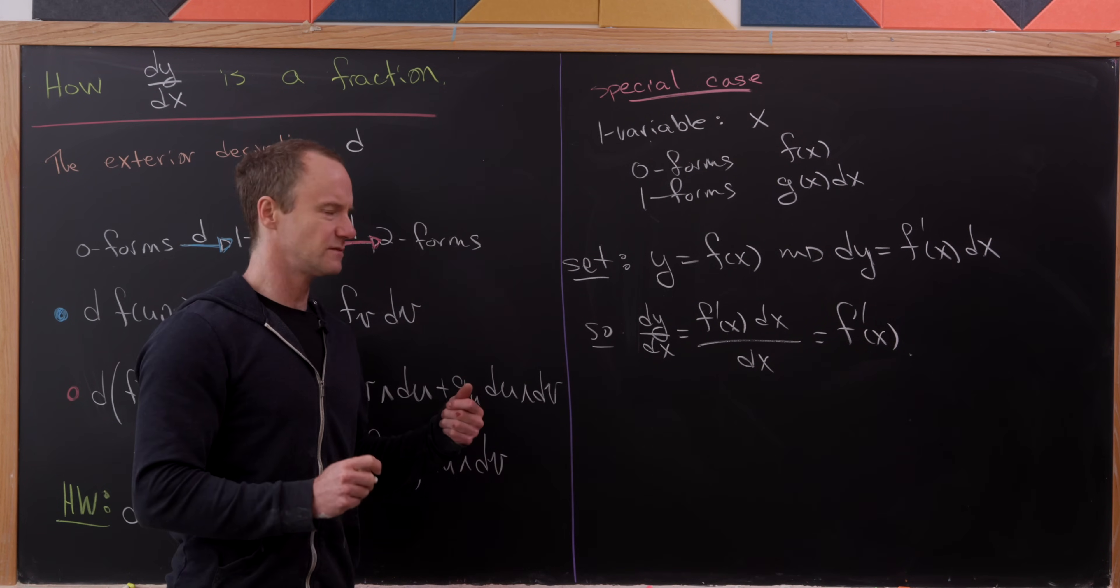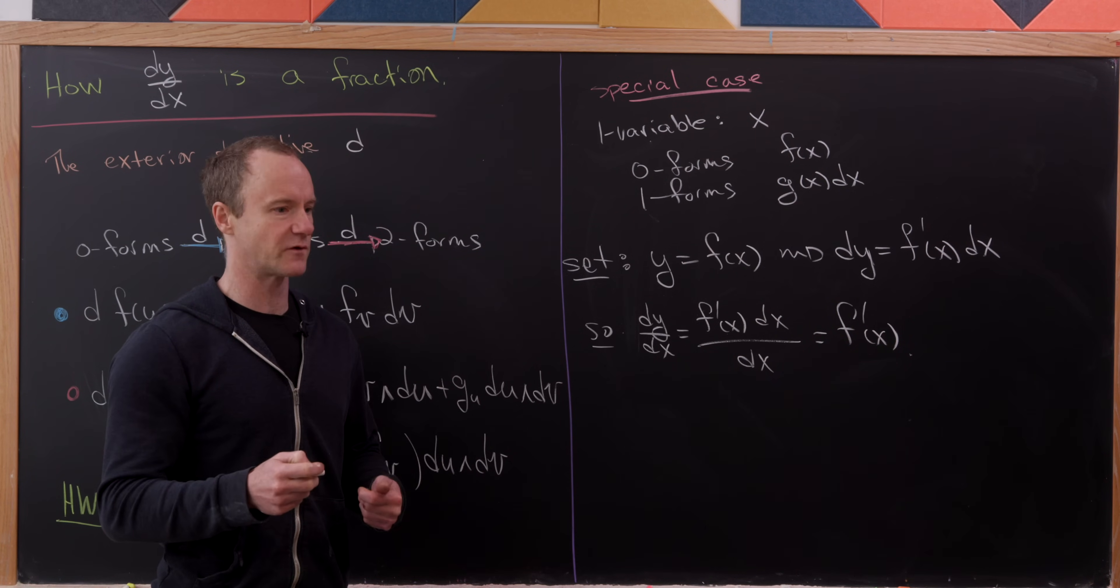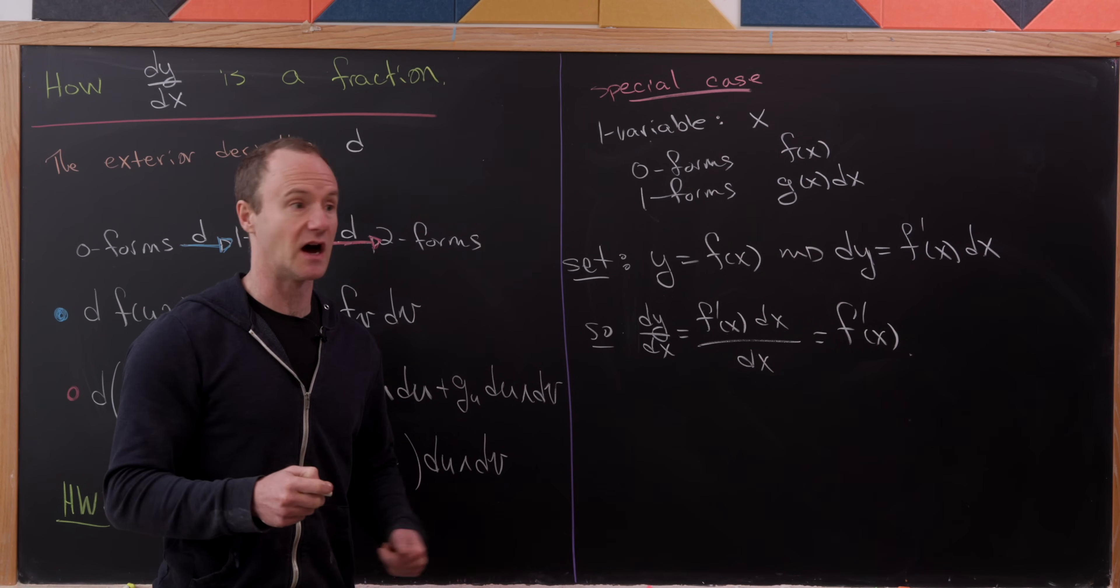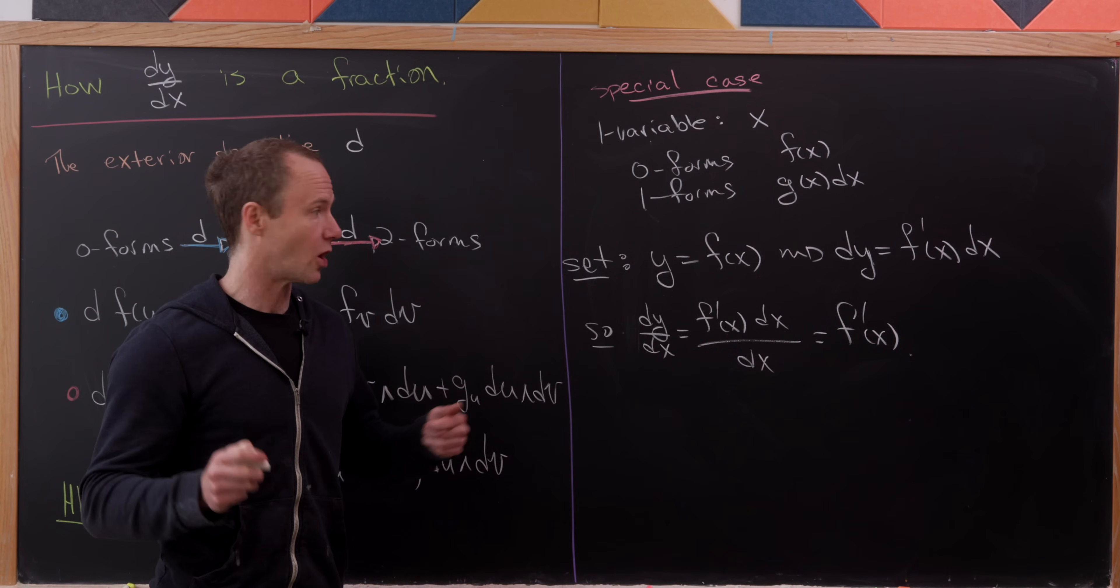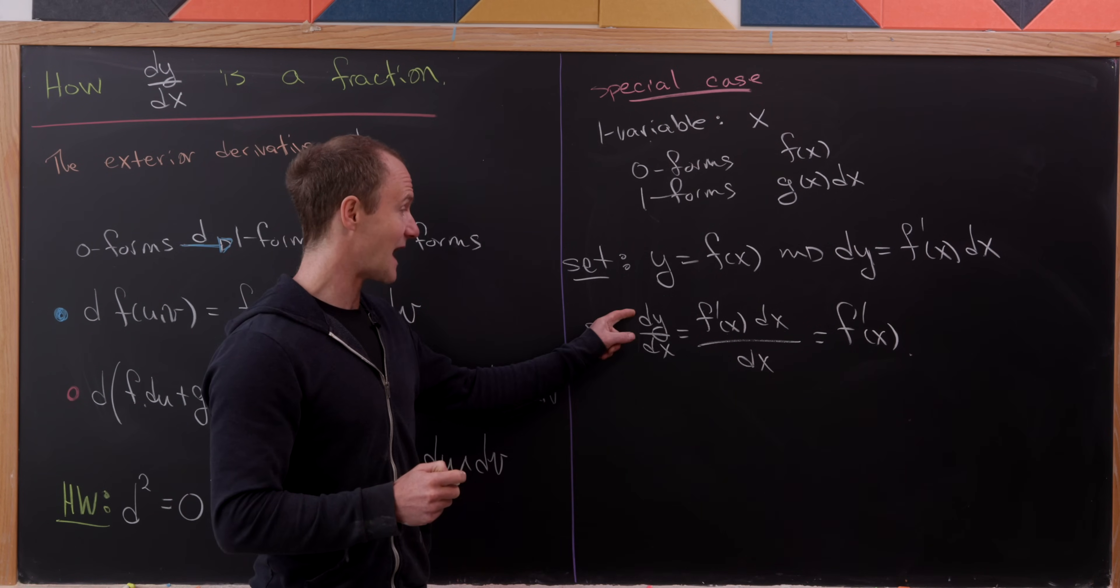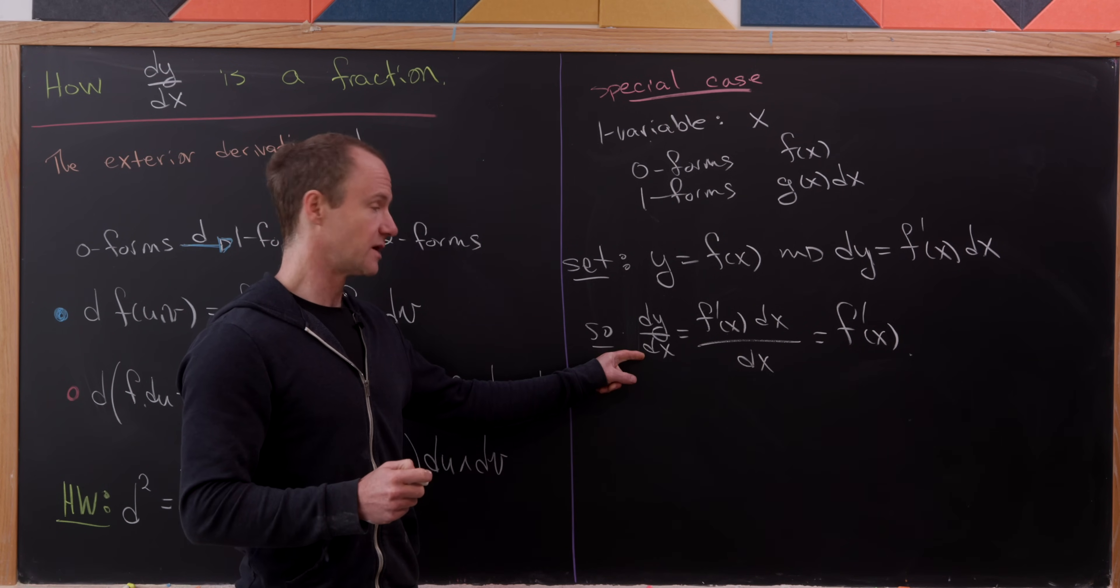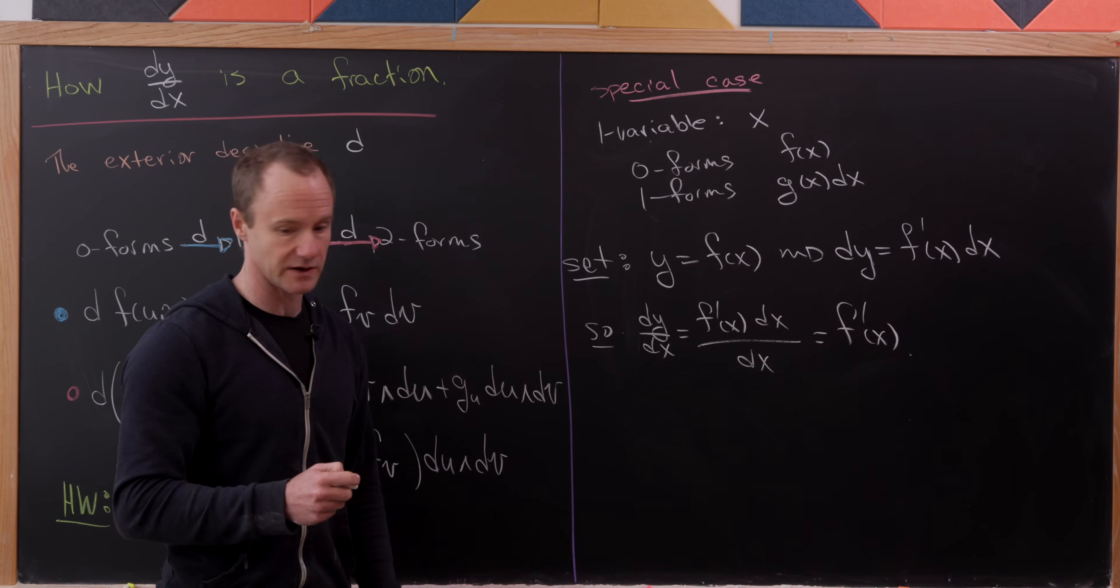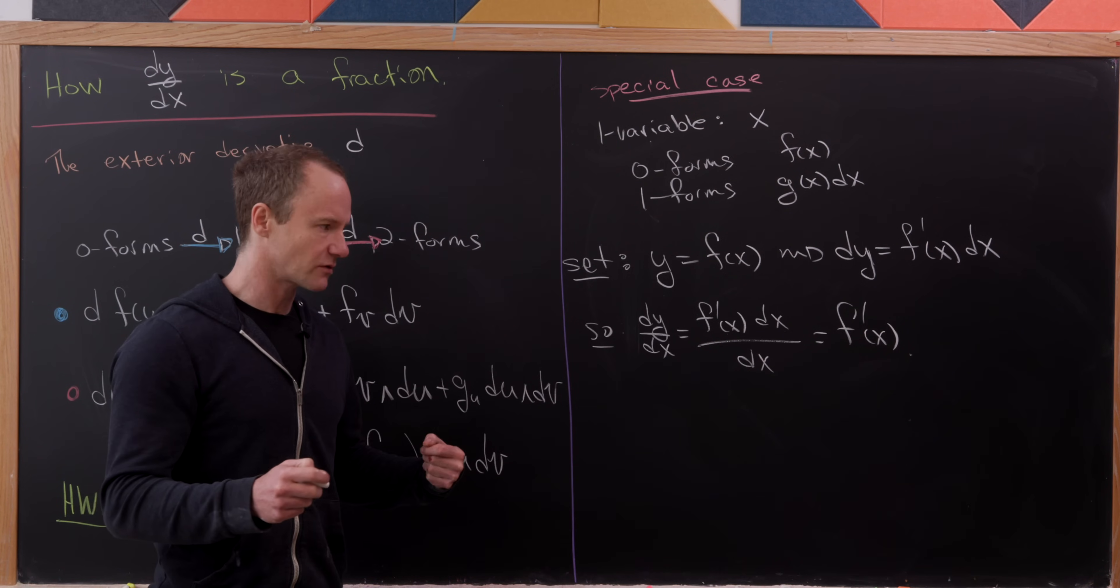Of course, we just divided by one of these one forms, elementary one forms, which we didn't really define super carefully. But you can define the idea of a nonlinear one form of which this reciprocal of dx would be if you work hard enough. But anyway, there you have it. Via these differential forms, we see that actually the fraction, which is the exterior derivative of y over dx, is in fact equal to f prime of x, which is essentially what we wanted to do.